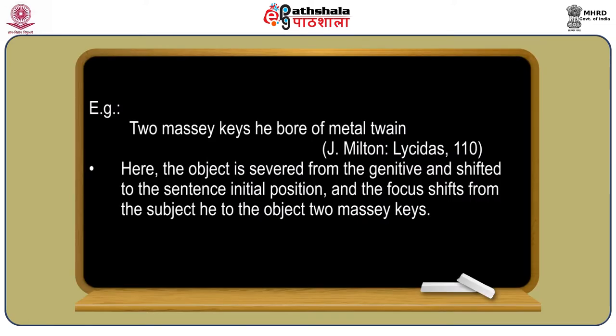Consider for example one line from Milton's 'Lycidas': 'Two Massy keys he bore of metal twain.' The normal sentence in English would be 'he bore two Massy keys of two metals.' But in the poetic line, the object is separated from the genitive and shifted to the sentence-initial position. The focus thus shifts from the subject 'he' to the object 'two Massy keys.' So in the line 'Two Massy keys he bore of metal twain,' whereas 'he' should have been in the line-initial position, 'two Massy keys' have been moved. This movement is topicalization.